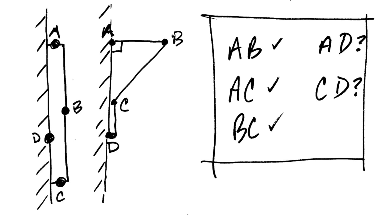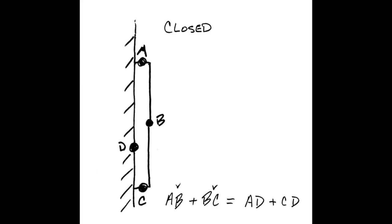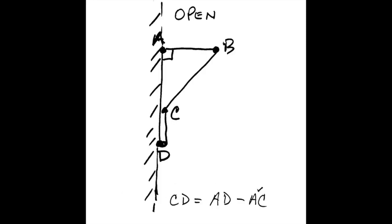That is the length of the long ground bar, AD, and the short crank, CD. We can see from the closed diagram that AB plus BC equals AD plus CD. And the open diagram tells us that the short crank CD is as long as the fixed crank AD minus AC, the distance that comes into being when the gizmo is open and the triangle forms.